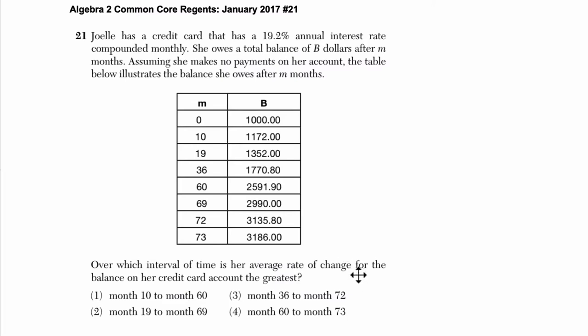Over which interval of time is her average rate of change for the balance on her credit card account the greatest? Okay, so here we want to find average rate of change, which is essentially slope. And I'll show a picture of this in a moment. But the idea of average rate of change is that you've got a graph of something, and it's not continually changing. Maybe this is exponential. So there's no constant slope.